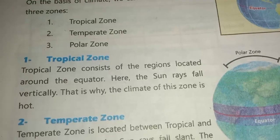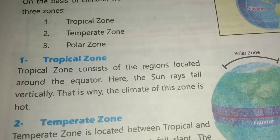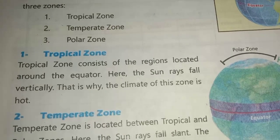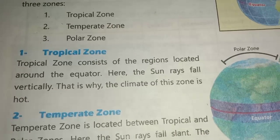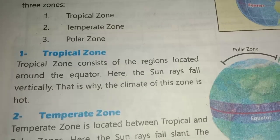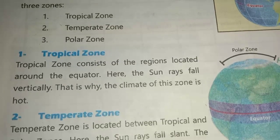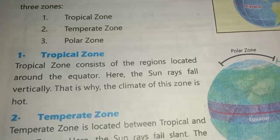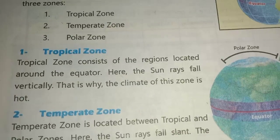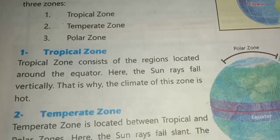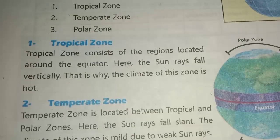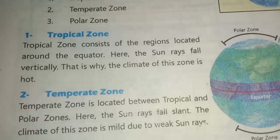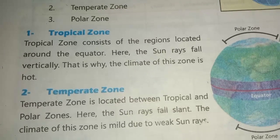First, what is tropical zone? Tropical zone consists of the region located around the equator. Here the sun rays fall vertically, which is why the climate of this zone is hot.